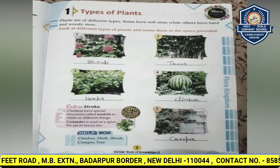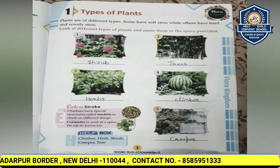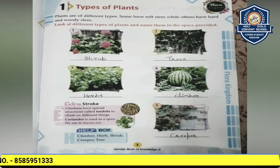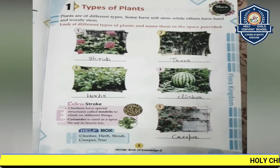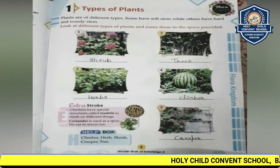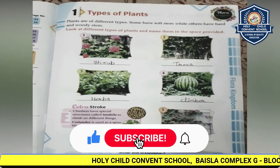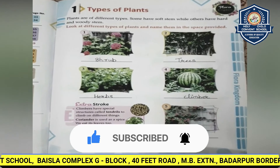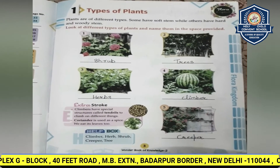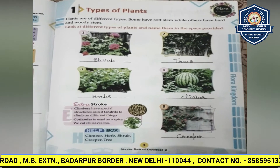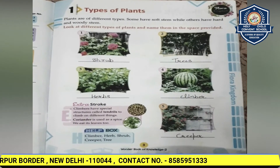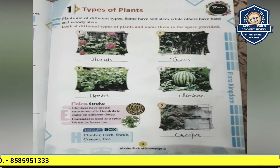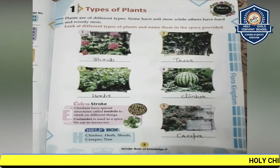Trees provide shade and shelter, timber for construction, fuel for cooking, and fruit for food, as well as having many other uses. The main important tree supplies us with amazing resources from its material, like wood, which we use for making furniture. Trees actually provide us with many more useful everyday items.